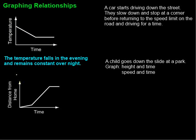Let's take a look at the second graph. Again, the first thing is to recognize the labels. We have time on the horizontal axis and distance from home on the vertical axis. We start at zero distance — meaning we're starting from home. Then, time goes by and we're slowly getting further from home, so not moving very quickly.